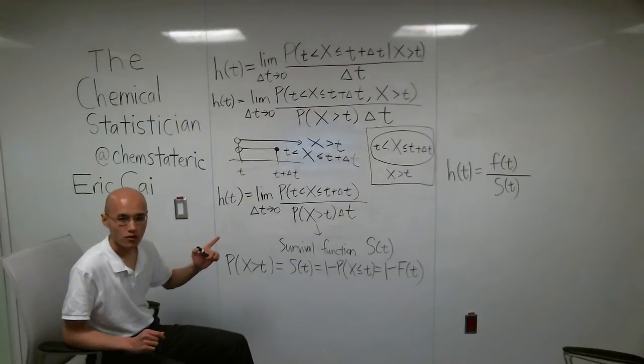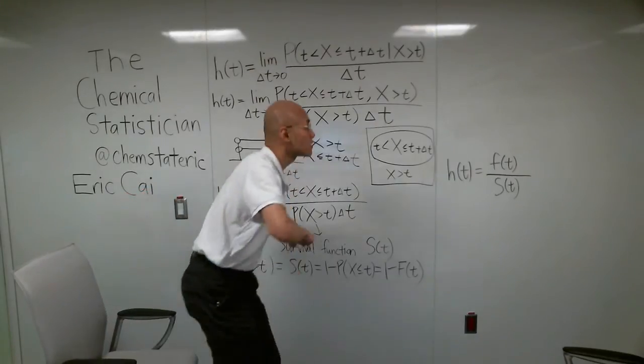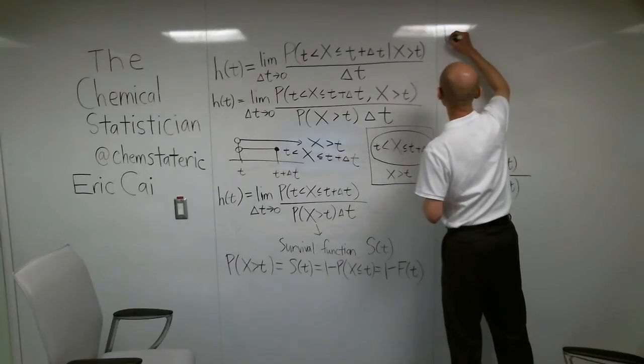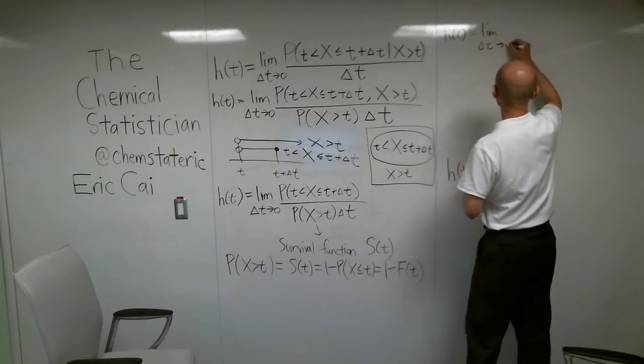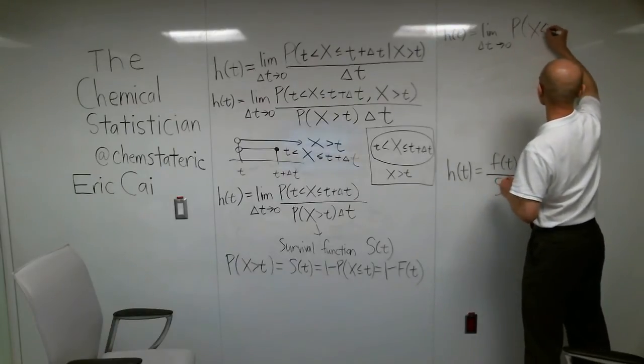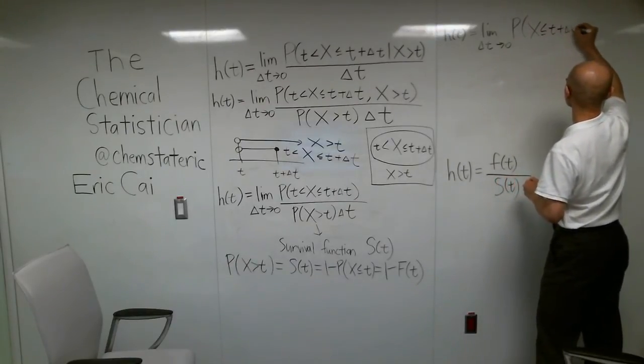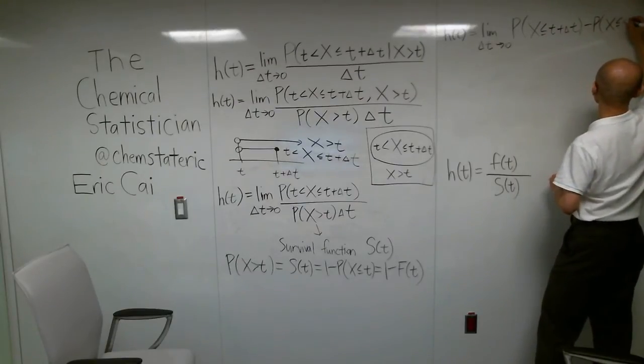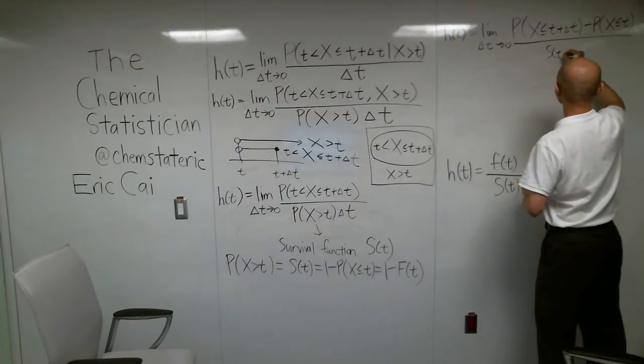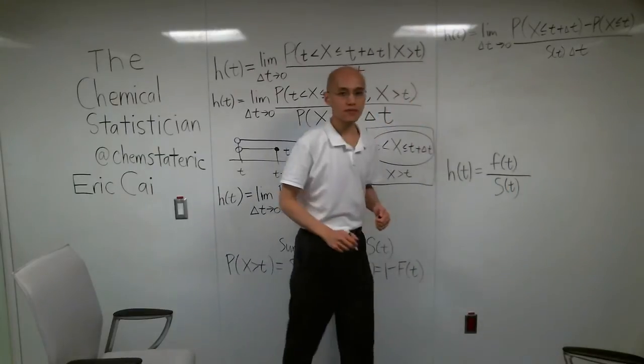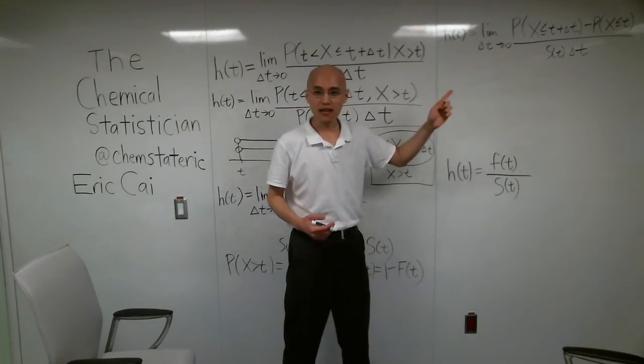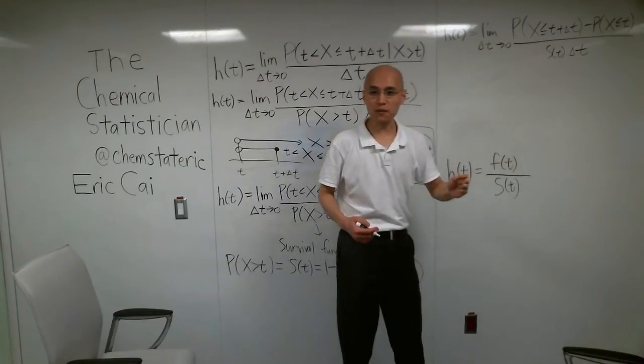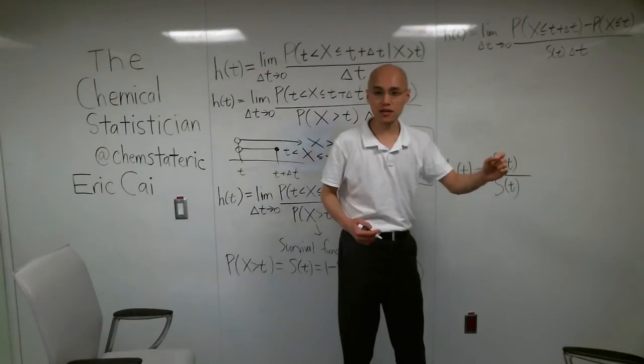let's simplify that numerator. Well, let's elaborate on that. Let's talk about that numerator even further. That numerator can be written as the probability that x is less than or equal to t plus delta t minus the probability that x is less than or equal to t. Now, hopefully you recognize that these two quantities in the numerator are simply the CDF evaluated at t plus delta t and t.